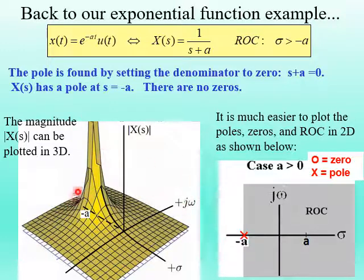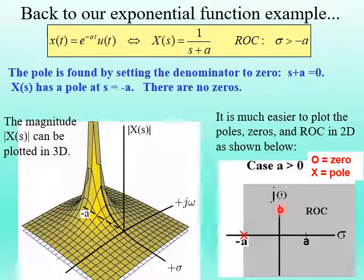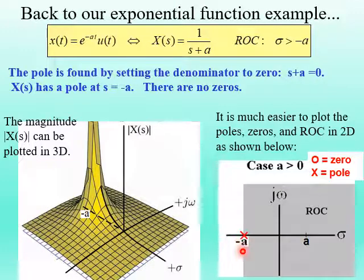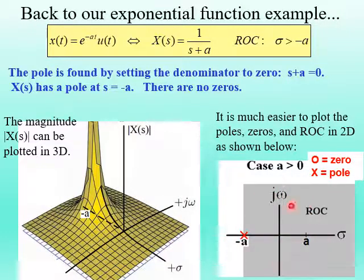Instead of using the 3D plot, we can simply show a pole-zero ROC plot in two dimensions. In the s-plane, the pole is marked with X at sigma equals minus a, and the region of convergence — sigma greater than minus a — is the shaded region to the right of that pole.